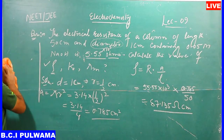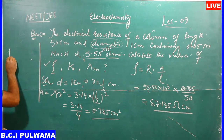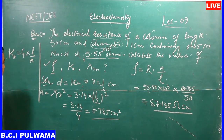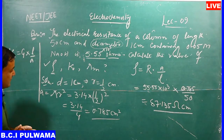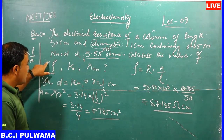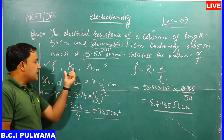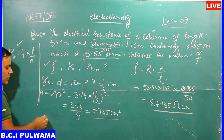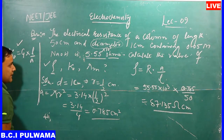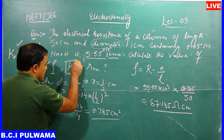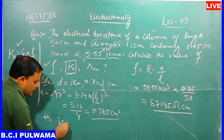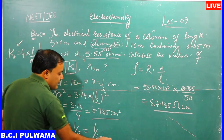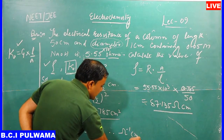Part two: calculate κ (conductivity). κ = G × (L/A). Alternatively, since conductivity is the reciprocal of resistivity, κ = 1/ρ = 1/87.135, and the answer is expressed in units of ohm⁻¹·cm⁻¹.